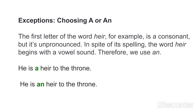There are some exceptions. For example, the word 'heir' — 'He is an heir to the throne.' The 'h' is silent, so we use 'an'. Similarly, 'Honorable principal', 'Honorable teacher' — we use 'an' because the 'h' is silent.